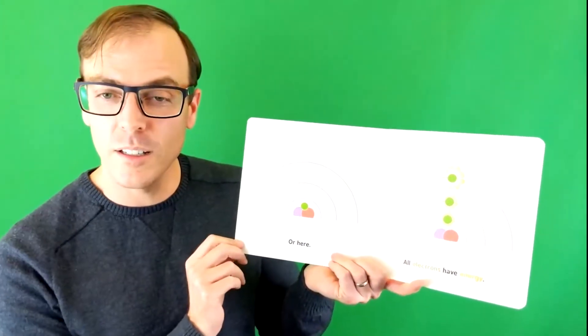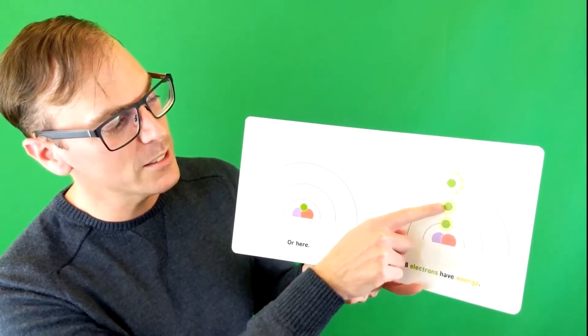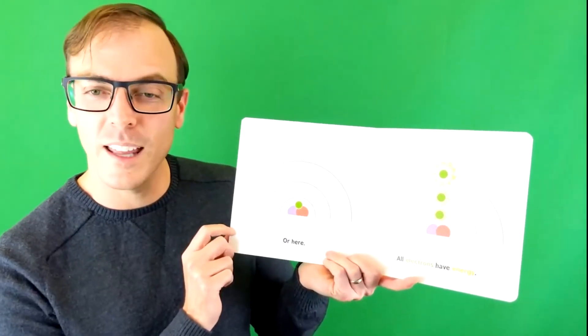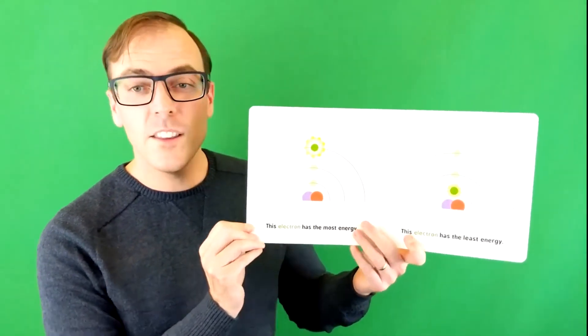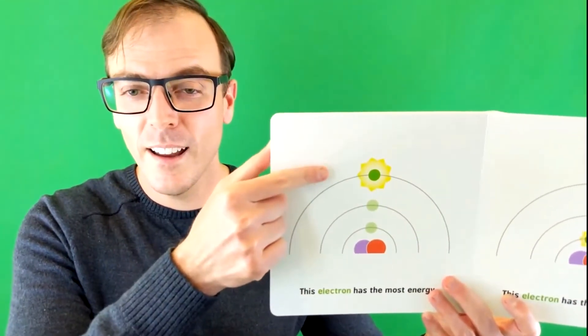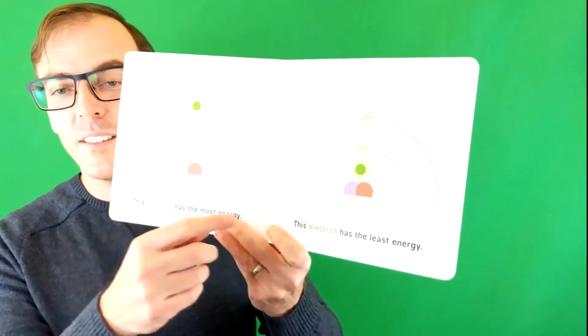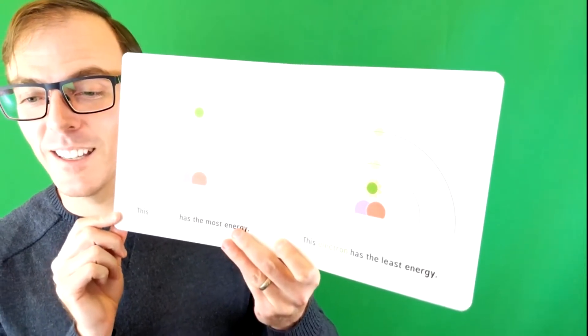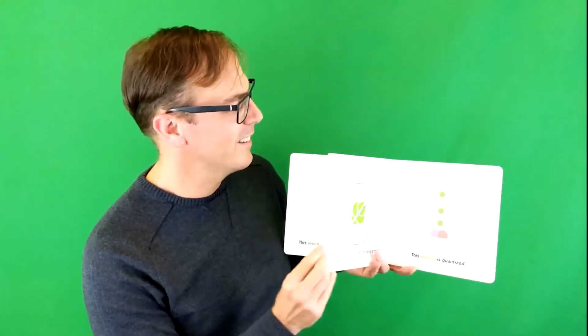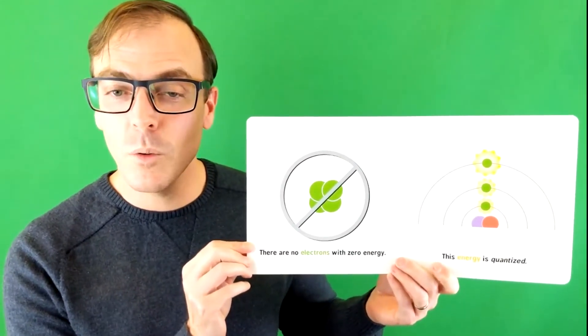All of the electrons have energy. Look at that. One, two, three with energy. This electron has the most energy. And this electron has the least energy. But there are no electrons with zero energy. And there's no electrons that just sit around.